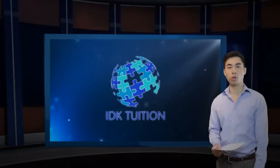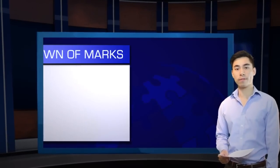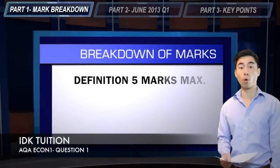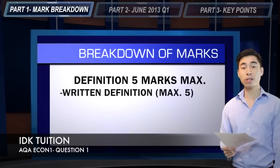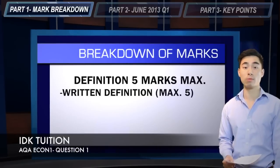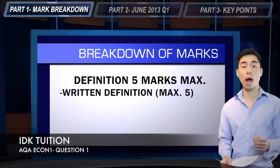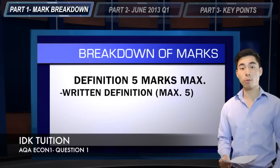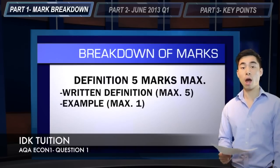The first question on the AQA Unit 1 paper is your five-mark definition question. Whilst it's perfectly possible to pick up all five marks from your written definition alone, that's definitely not the best way to be approaching this question. There are two other ways in which you can pick up your marks: the first is for including a relevant example, and the second is including a relevant diagram.